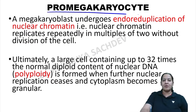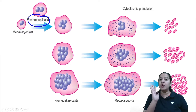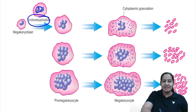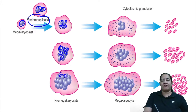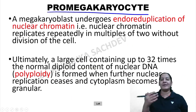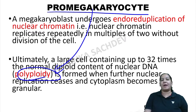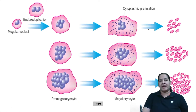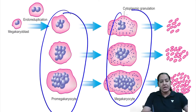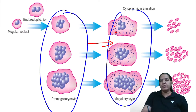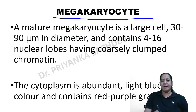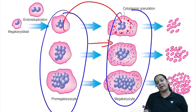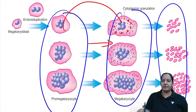Megakaryoblast gives rise to promegakaryocyte by endo-reduplication — only this cell in the human body undergoes endo-reduplication. In endo-reduplication, only the nucleus is dividing; the cytoplasm is not dividing. From 1 nucleus, 2 are formed; from 2, 4; from 4, 8; and from 8, 16 are formed. This creates a hyperploid — polyploid — cell. That polyploid cell is promegakaryocyte, the only hyperploid cell in the human body. Promegakaryocyte then gives rise to megakaryocyte. The key difference is in the cytoplasm: granules are present in megakaryocyte, becoming abundant as red-purple granules, distinguishing promegakaryocyte from megakaryocyte. Ultimately, megakaryocyte gives rise to platelets — multiple pseudopods are formed, they degrade, and multiple platelets are formed.